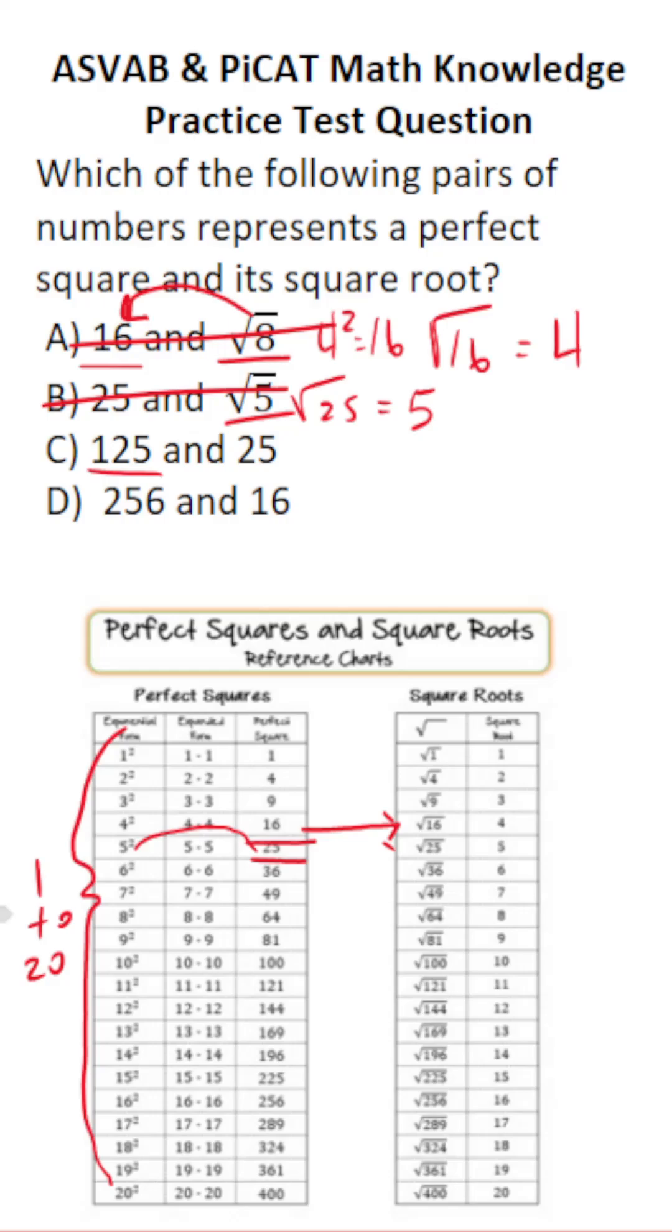Is 125 a perfect square? If we look in our perfect squares column, we can see that there is no perfect square that is 125. So this is incorrect.